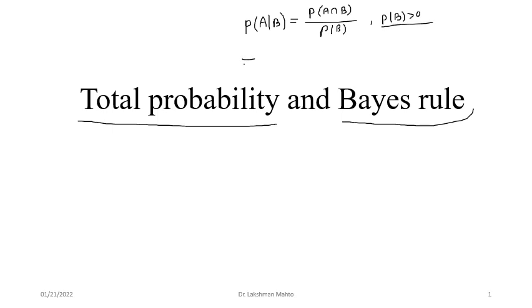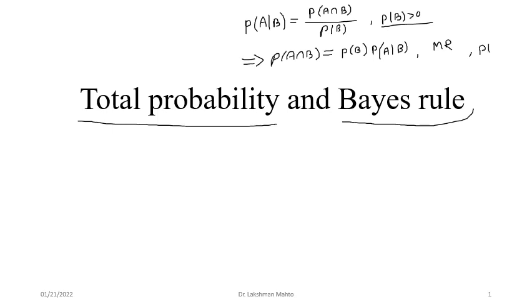This was restated as the multiplication rule: the joint probability of A intersection B equals probability of B times probability of A given B. This is simply called the multiplication rule, with the condition that probability of B is greater than zero since B is happening first.